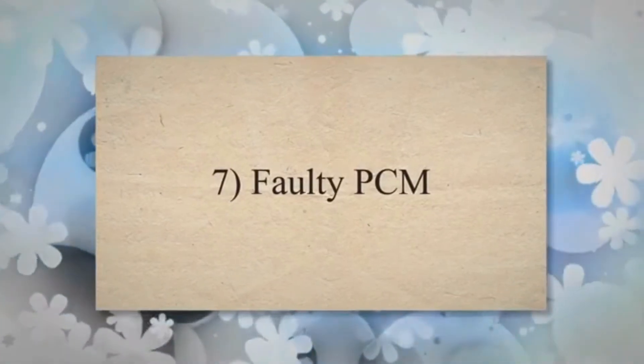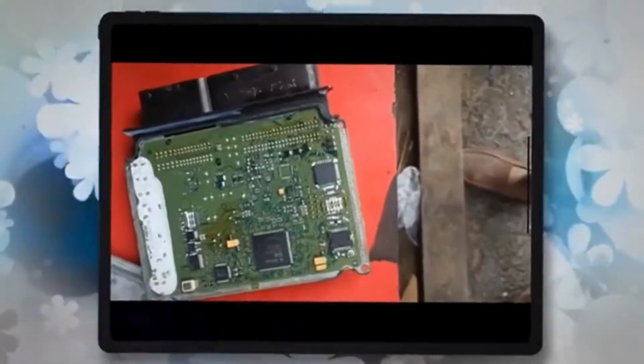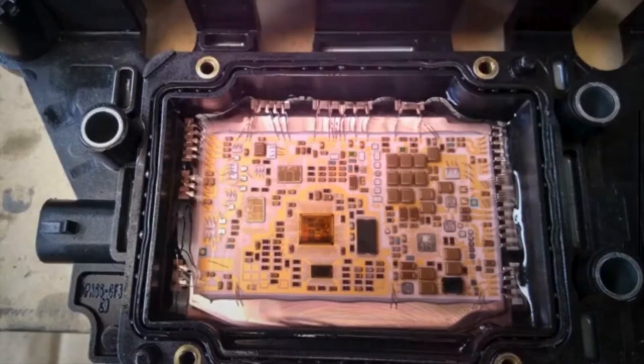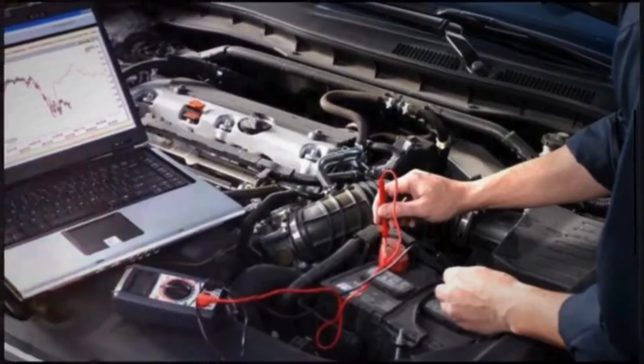7. Faulty PCM. In rare cases, a malfunctioning powertrain control module can send incorrect signals to the oxygen sensors and trigger a P0430 code.